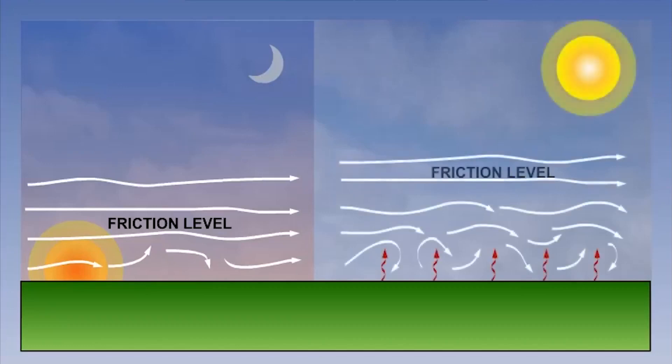Whereas during the afternoon when the land is at its warmest, the friction level will be higher. However, on average, the depth of the friction layer is only a few thousand feet above the surface, usually two to three thousand feet, but as we have seen, this will vary.